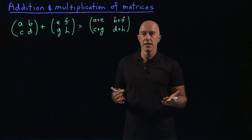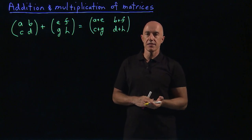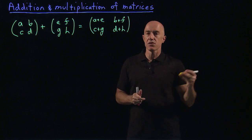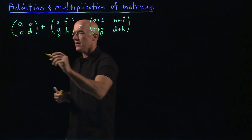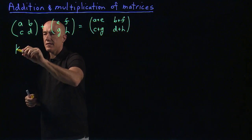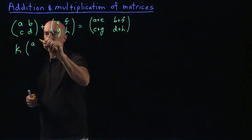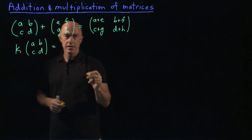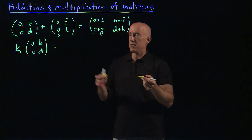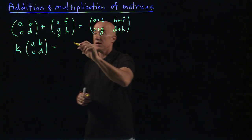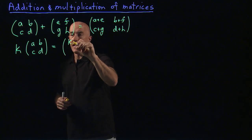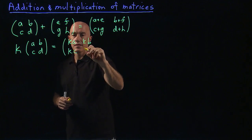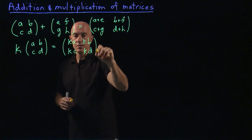Another easy one is multiplication by a scalar. So let's multiply a matrix by a scalar called K. Here, K times [A, B, C, D] — K just gets multiplied by each of the elements. So we just have [KA, KB, KC, KD].